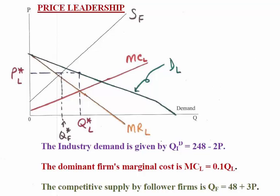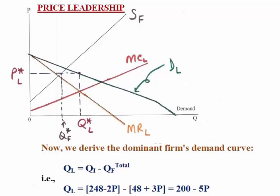Let us solve a problem to obtain the profit maximizing quantity and price that the leader will supply, and then calculate the quantity that the followers will supply to get back to total industry demand. We start by deriving the leader's demand curve, which is the industry demand minus the quantity supplied by the followers. The industry demand is Qd = 248 − 2P, and the follower's supply is Qf = 48 + 3P. Subtracting follower supply from industry demand gives Ql = 200 − 5P.